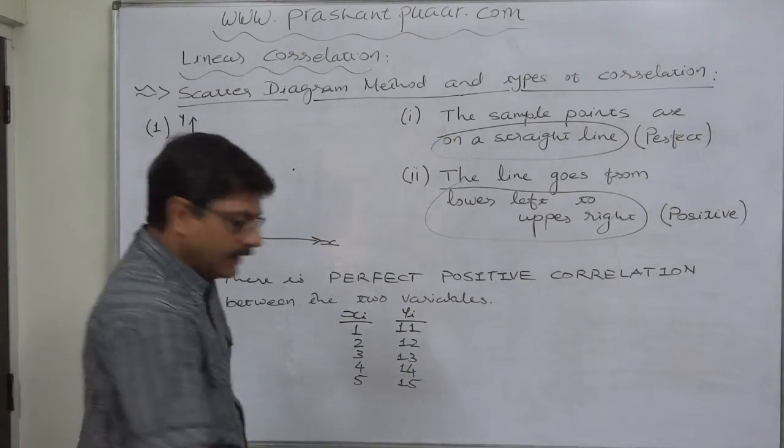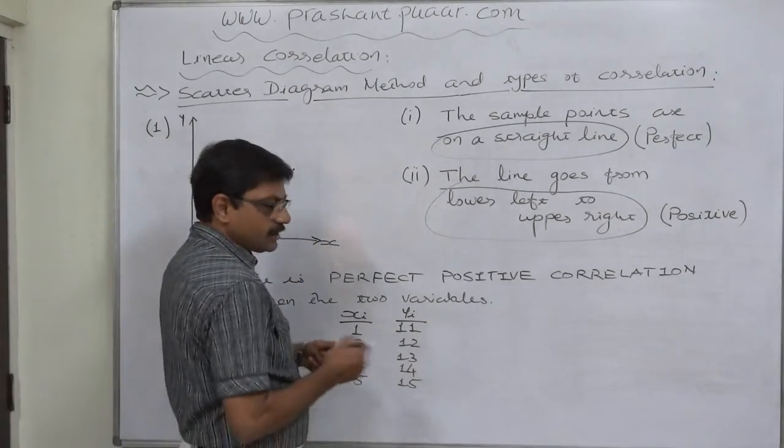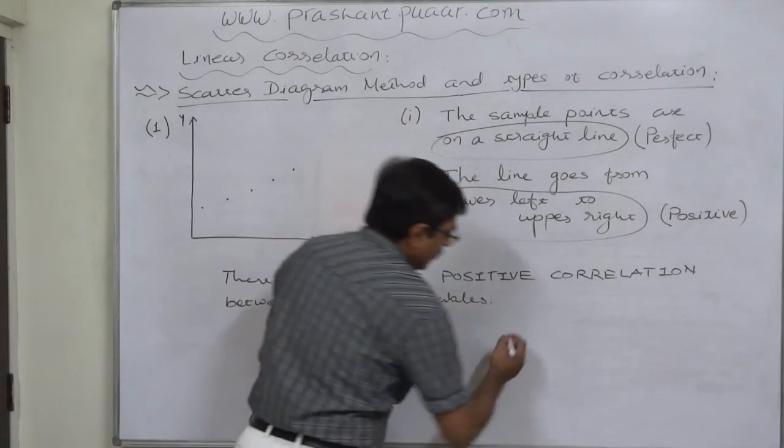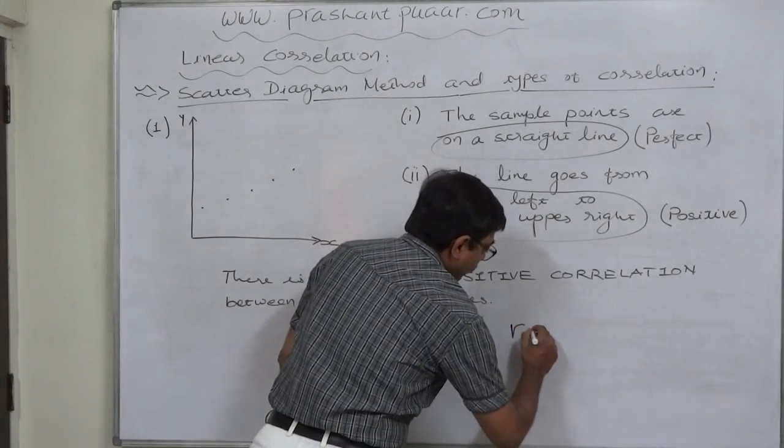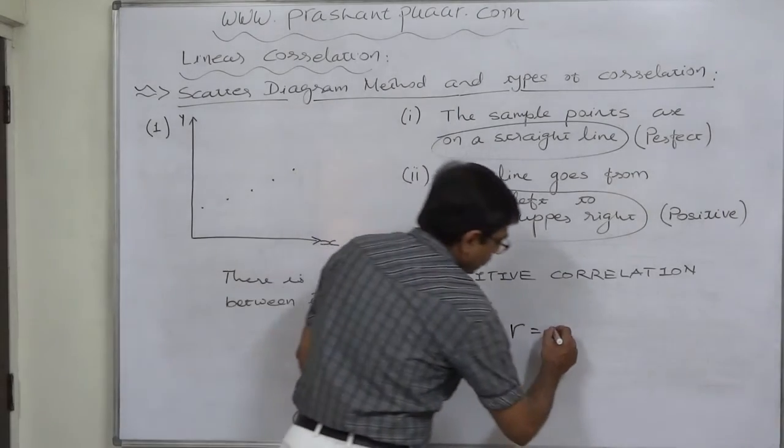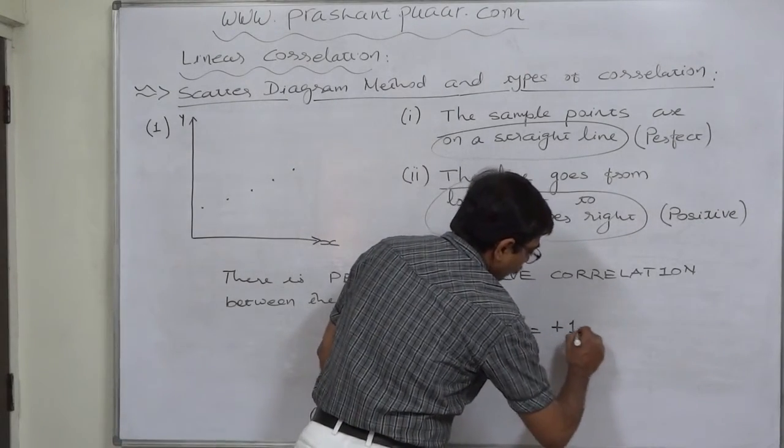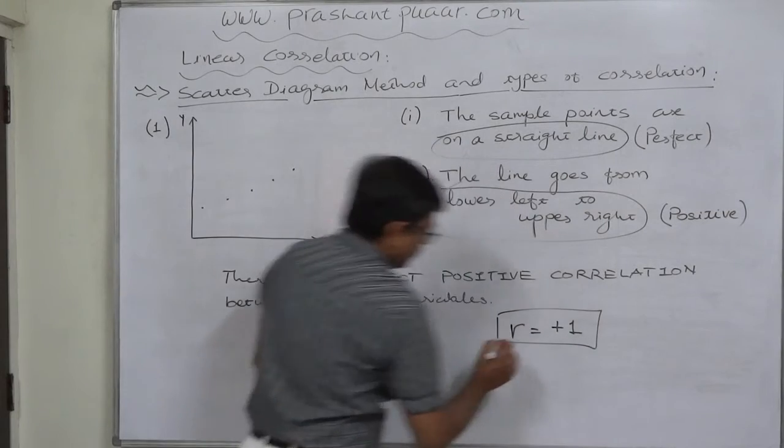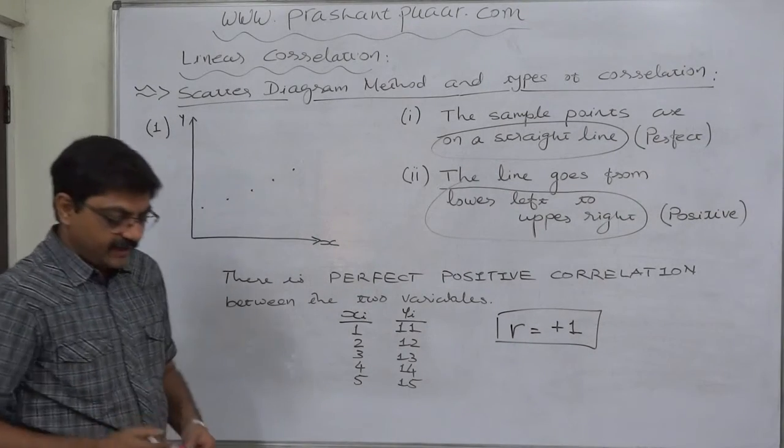If we calculate the coefficient of correlation through formula given by Karl Pearson, we can have R or coefficient of correlation exactly positive one. Now, this is the sign of perfectness.